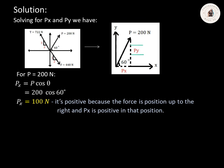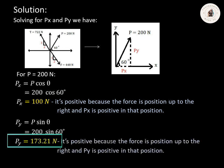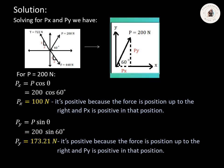Next, we compute PY. As you can see in the figure, PY is at the opposite side. So PY equals P multiplied by sine theta. P is 200 Newton and theta is 60 degrees, so PY equals 200 multiplied by sine 60 degrees. Using our calculator, PY equals 173.21 Newton. The sign convention is positive because the force is positioned up to the right and PY is positive in that position.